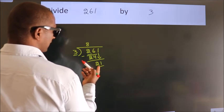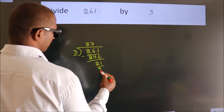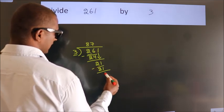When do we get 21? In the 3 table, 3 times 7 is 21. Now we subtract. We get 0.